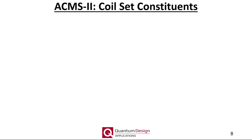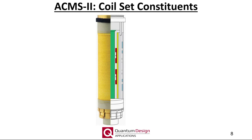How are AC susceptibility measurements actually performed? The heart of the ACMS2 is the coil set. Compared to the VSM coil set, the ACMS2 coil set requires many more components. The ACMS2 coil set has an 8mm diameter bore, meaning our standard 6mm diameter straws can be used as sample holders. AC measurements require four distinct coils, each with a specific function.